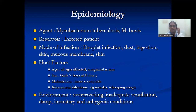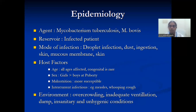Host factors: all age groups are affected and congenital infection is rare. When it comes to sex, girls are more affected than boys at puberty, but after that boys are more affected. Malnutrition is a susceptible risk factor. Intercurrent infections like measles and whooping cough are another risk. Environmental factors like overcrowding, inadequate ventilation, damp environment, and unhygienic conditions are also epidemiological risk factors.